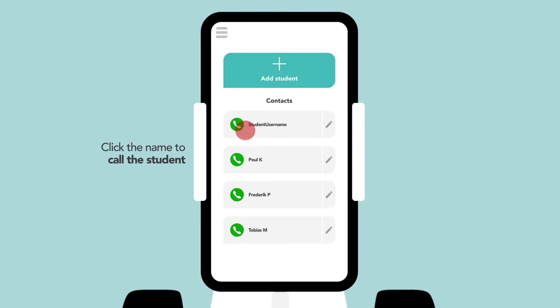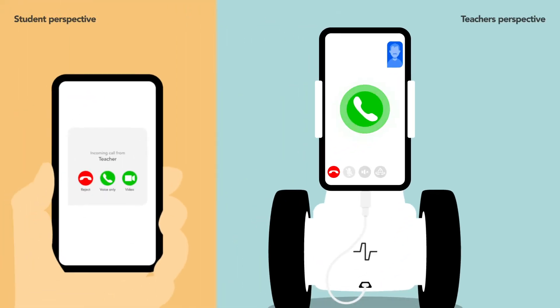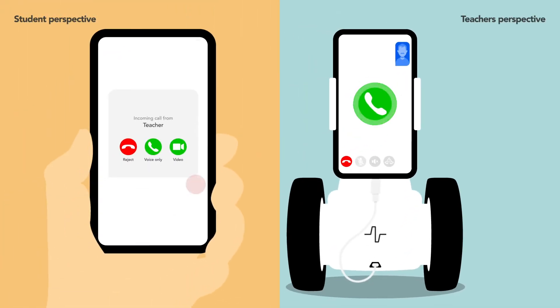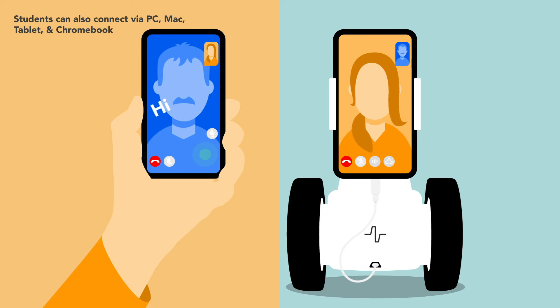To call a student, simply click the name in your contact list. When you click the button to call, your student will receive the call in the app. The student can accept the call with the camera on or off, which allows them to maintain their privacy.